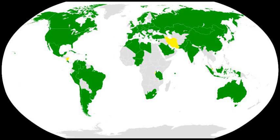The register is kept by the United Nations Office for Outer Space Affairs and includes: name of launching state; an appropriate designator of the space object or its registration number; date and territory or location of launch; basic orbital parameters including nodal period, inclination, apogee and perigee; and general function of the space object. Information on registered objects is available at the UNOOSA site.